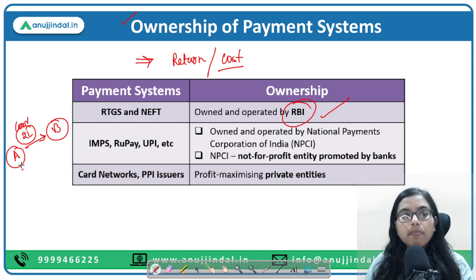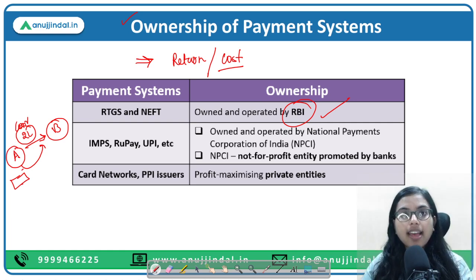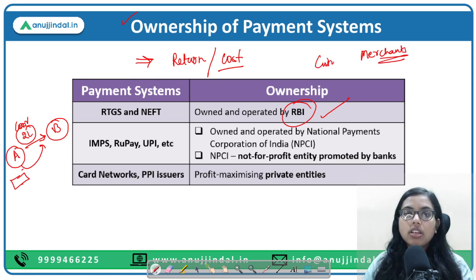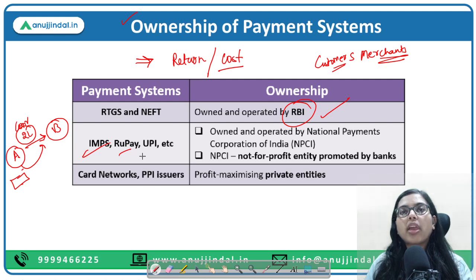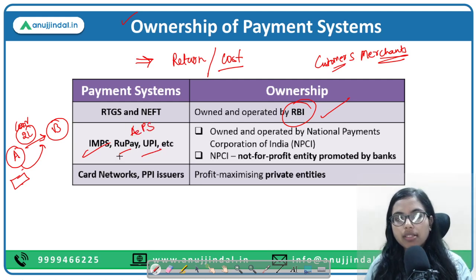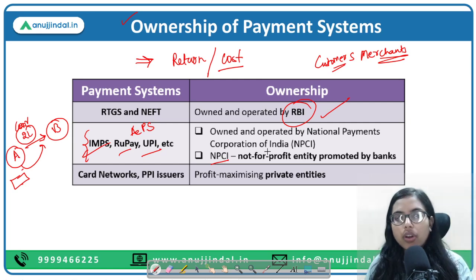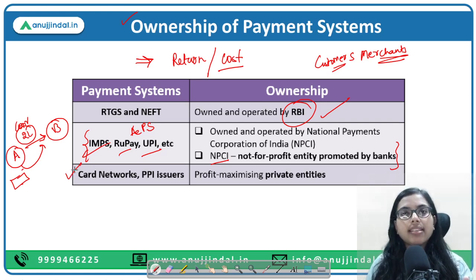For RTGS and NEFT, the customer pays the charge. But for credit cards and other instruments, it is the merchants who pay, not the customers — this is a basic difference to remember. Card networks and PPI issuers are basically private organizations whose main objective is profit maximization.